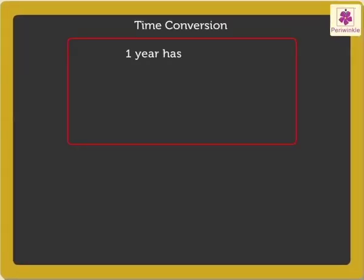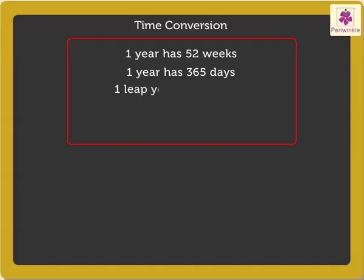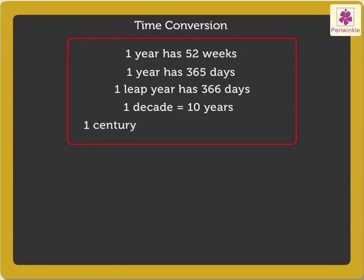One year has 52 weeks. One year has 365 days, and one leap year has 366 days. One decade is equal to 10 years. One century is equal to 100 years, which is the same as the period of 10 decades.